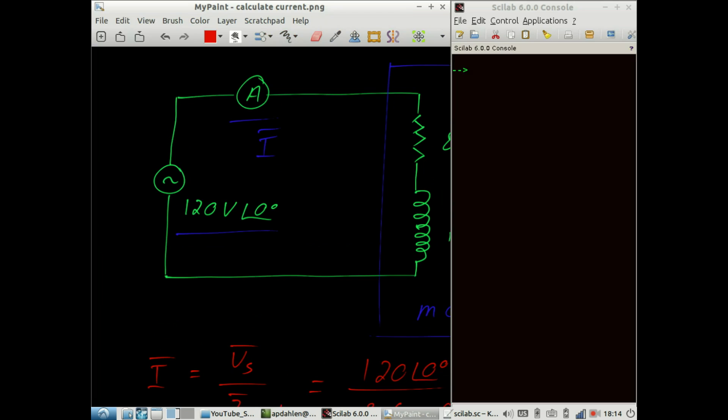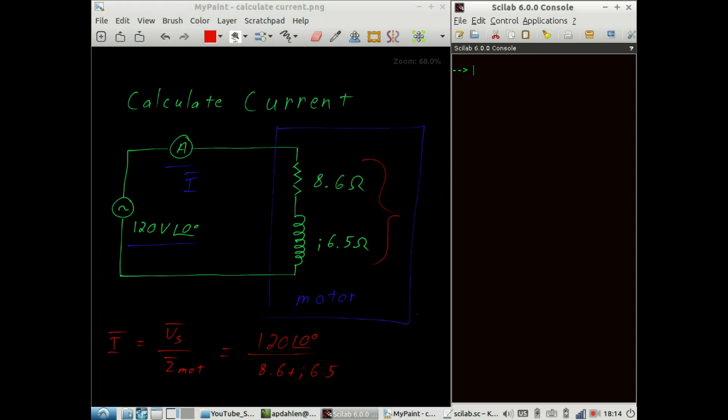We are now going to shift over to Scilab to perform the actual calculations. So we can enter our values. First, the source voltage is equal to 120. We could put the imaginary part on there if we like, but it doesn't matter because you see Scilab strips it off. And you are left with only a real component of 120 volts.